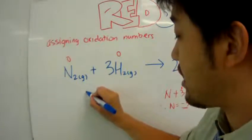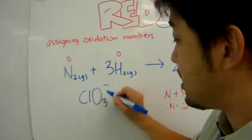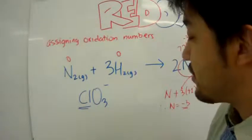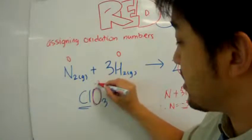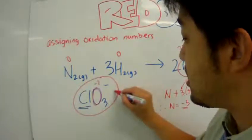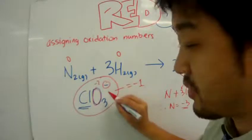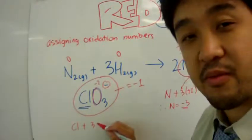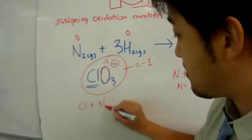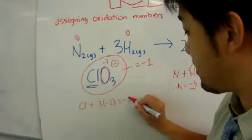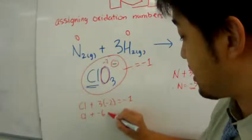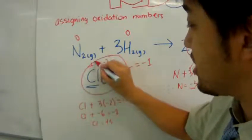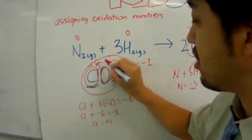Let's take the previous example of chlorate ClO₃⁻. What's the oxidation number of Cl? We know the oxidation number of oxygen is always minus two, and the oxidation number for this entire species is minus one because of the charge. So: Cl + 3×(−2) = −1, giving Cl − 6 = −1, therefore Cl = +5. The oxidation number for chlorine in chlorate is plus five.